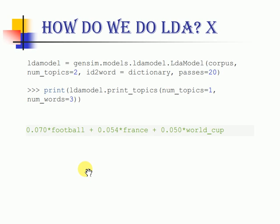You don't have to code anything from scratch — you just have to use a simple library or a function call from the Gensim library, and this is how your output would look. How do I interpret the output? For example, football comes up first, then France, then World Cup. After the model converges, it sorts all the words based on the count they appear and gives out a probability score — for example, 0.070 for football, 0.054 for France. You sort based on the count for each word that appears in a topic, then output the words in descending order along with a probability score.